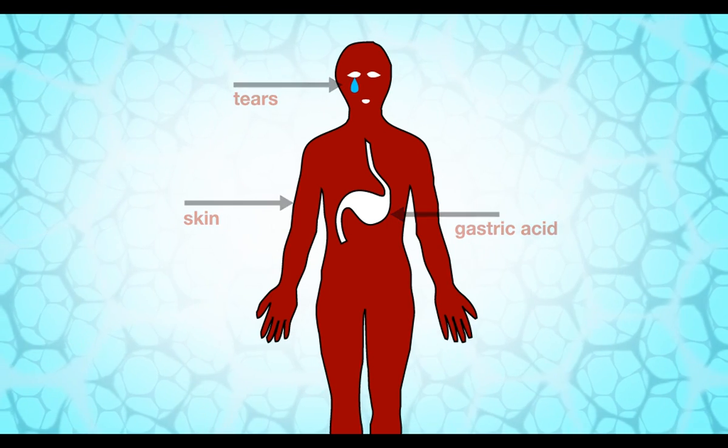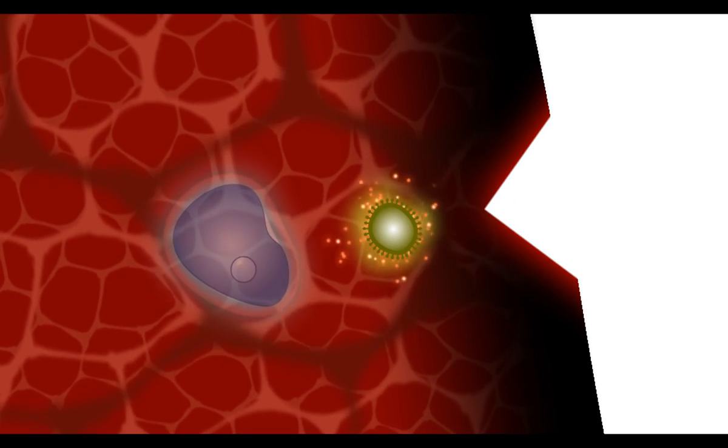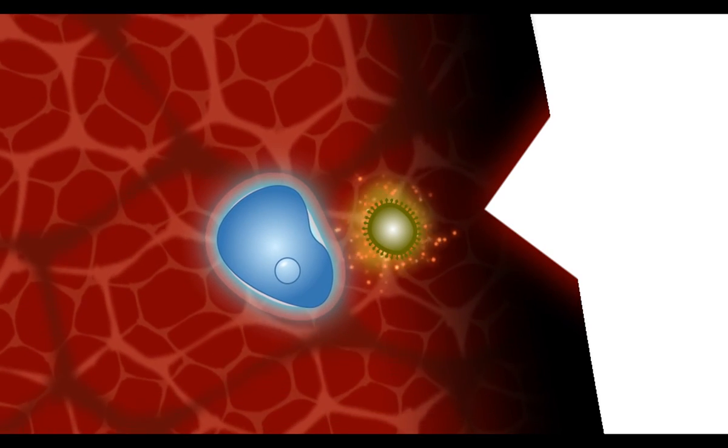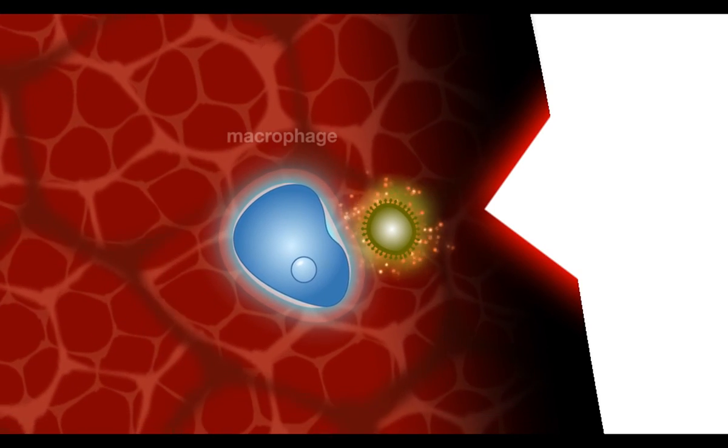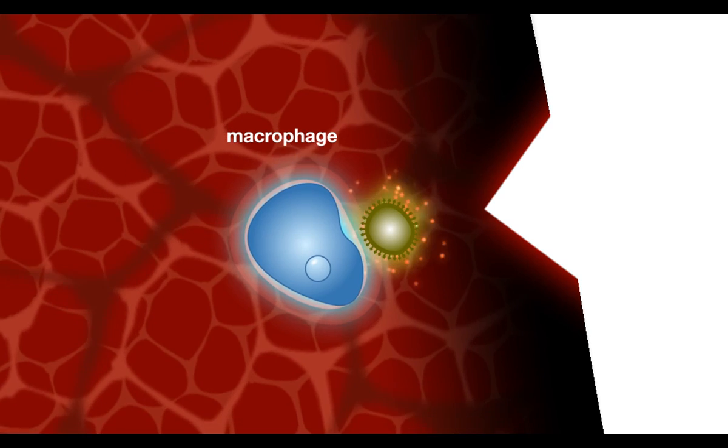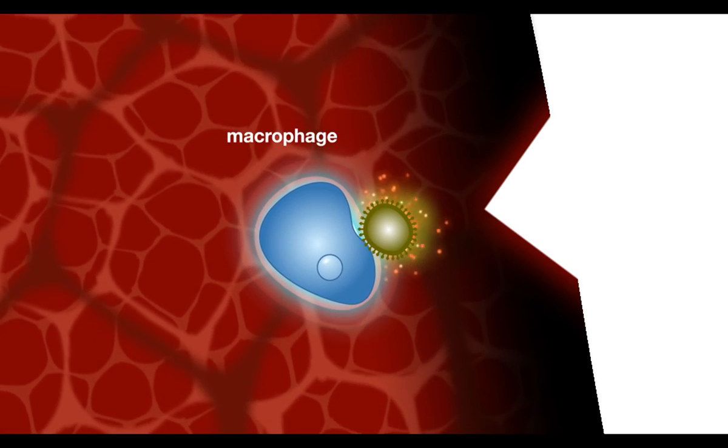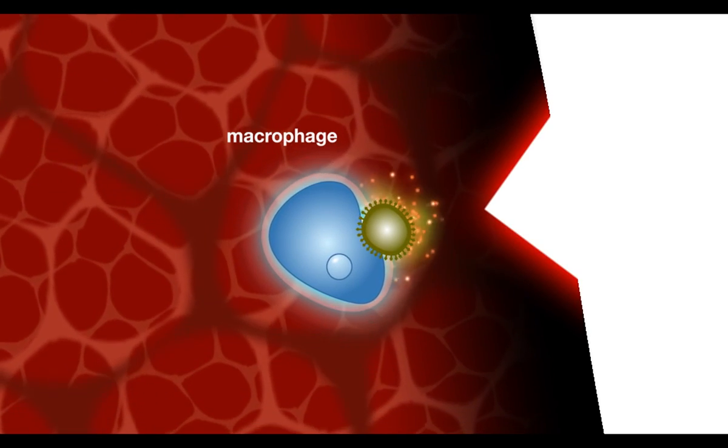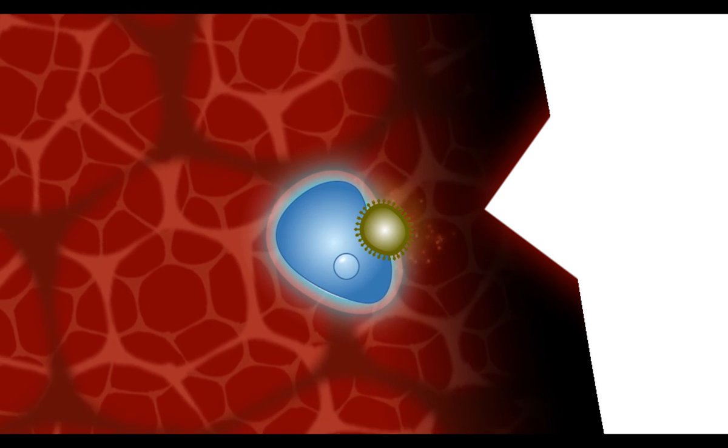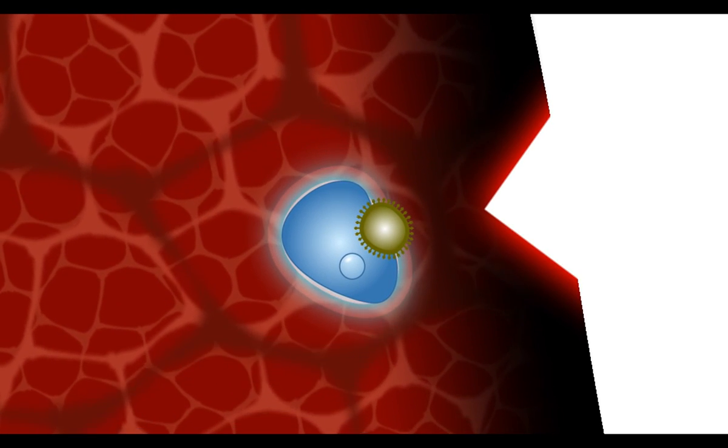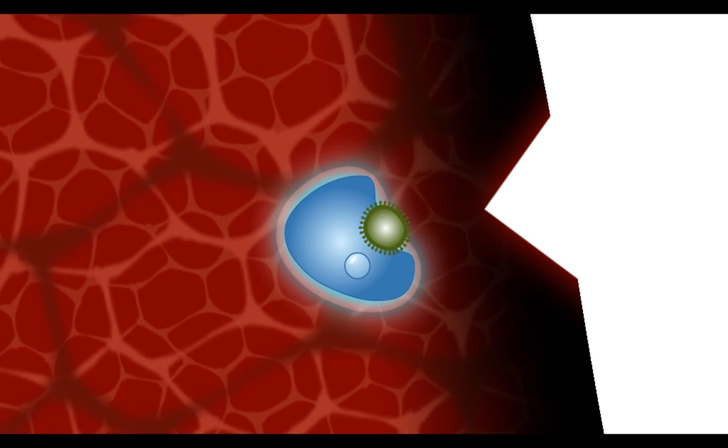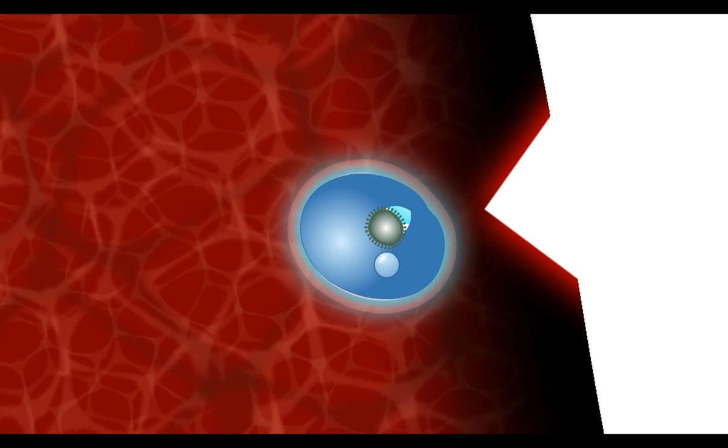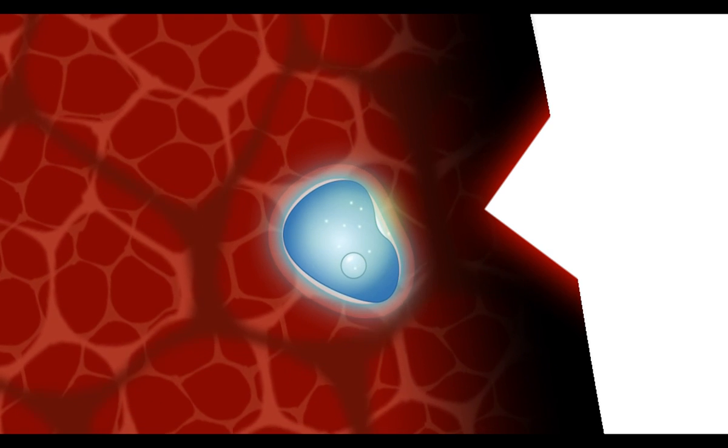However, if these barriers are breached, for example by bacteria entering the body through the skin, the antigens encounter large cells called macrophages which are resident in the skin. The word macrophage means big eater. If a macrophage recognizes the antigen as something foreign and not self, it engulfs it by a process called phagocytosis and can destroy it.